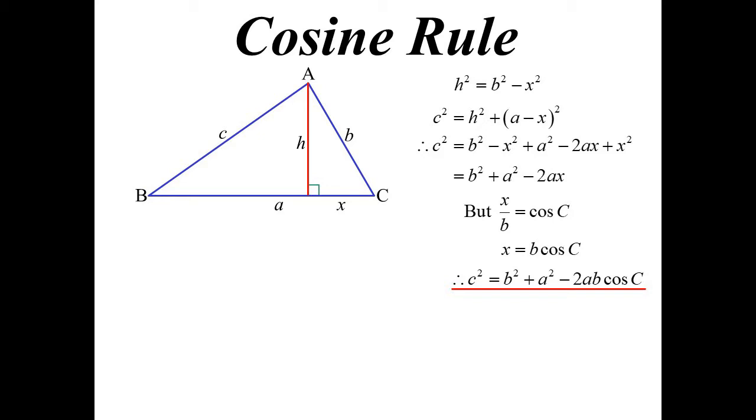If it was a right angle triangle, then that angle C would be 90 degrees, and the cosine of 90 is zero. So you just get C squared is A squared plus B squared. So that's when the angle is not 90, we have that additional bit of the cosine rule.